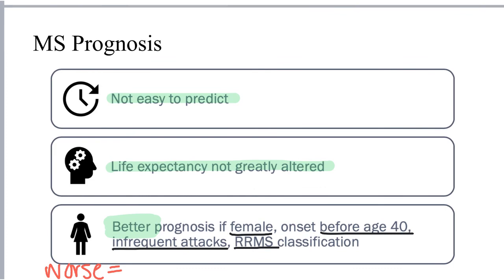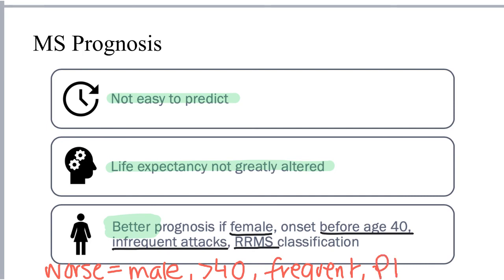An individual who is male, with onset after age 40, who has frequent attacks, or who is classified as primary progressive, would be thought to have a worse or poorer prognosis.